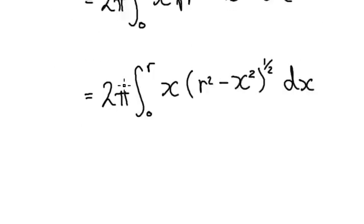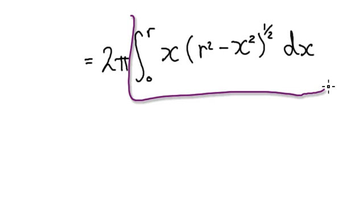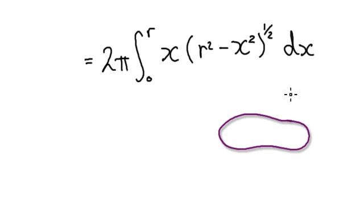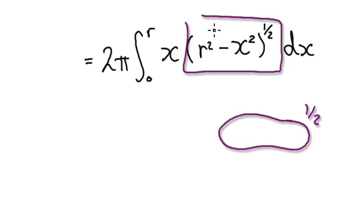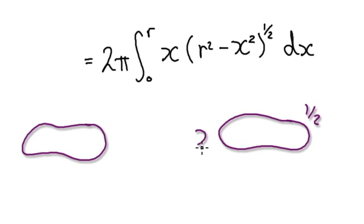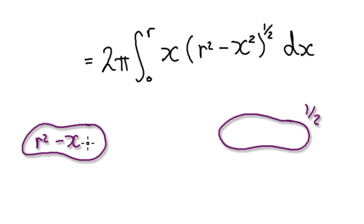We got to this stage here where we had to integrate this expression. To integrate this, your eyes should zoom into this. What you've got currently is something to the power of a half. To integrate this, you are looking for something that when you differentiate it, it will give you this thing here, but with an x on the outside. So your initial guess should be (r² minus x²).